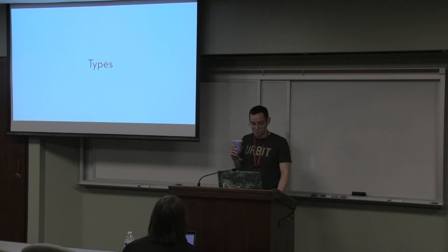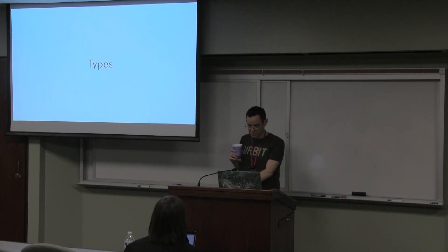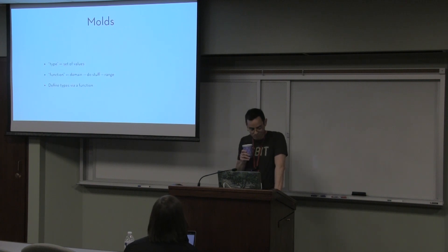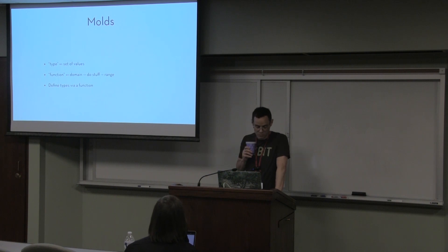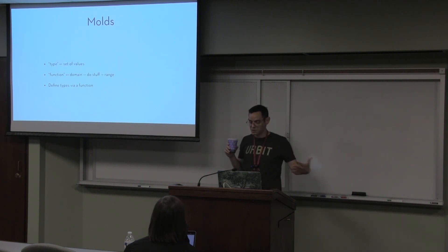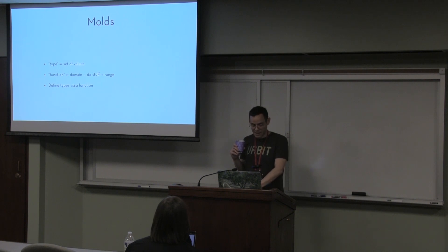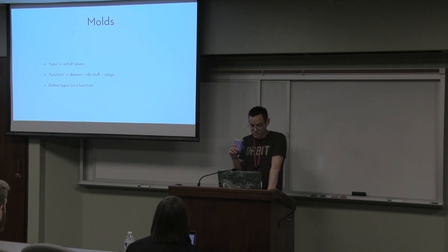We'll talk about types because it's functional programming. What is a type really? It's a set of values that conforms to some kind of semantic criteria — you could have infinitely many values, zero values, or maybe one value. Conveniently, this is also really close to what a function is — it takes some input domain, does stuff, and the output is some other domain. For a minimalist type system, all you really need is the humble function, which could take any value as a domain and validate that it conforms to whatever your criteria is.